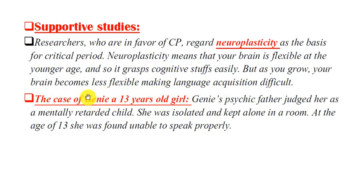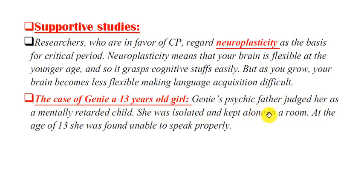A critical example of the critical period is the case of Genie, a 13-year-old girl. Genie's psychotic father judged her as a mentally retarded child. She was isolated and kept alone in a room. At the age of 13, when she was found, she was unable to speak properly.